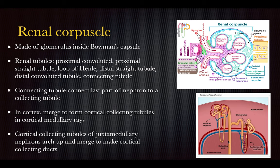The connecting tubule connects the last part of the nephron to the collecting tubule. In the cortex they merge to form the cortical collecting tubules in long structures called cortical medullary rays. The cortical collecting tubules of the juxtamedullary nephrons arch up and merge to make the cortical collecting ducts.